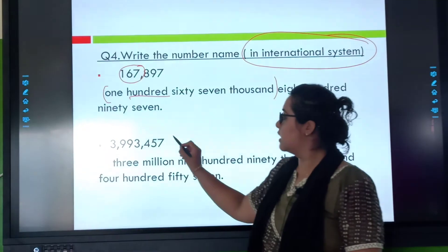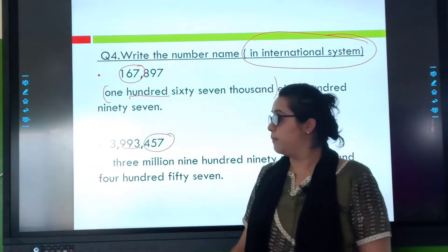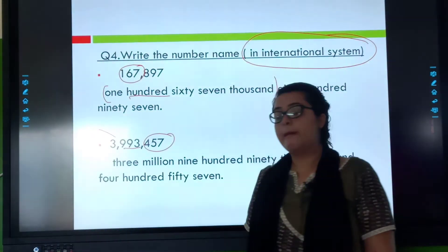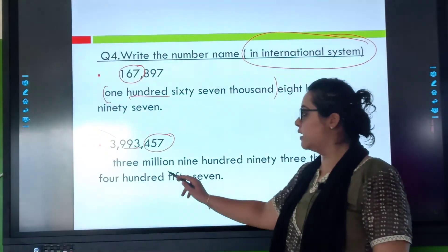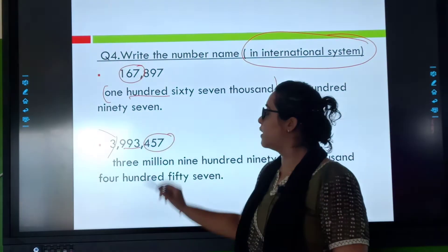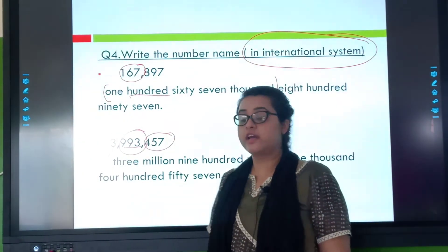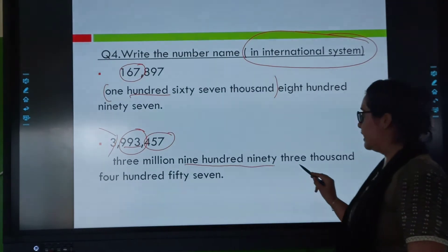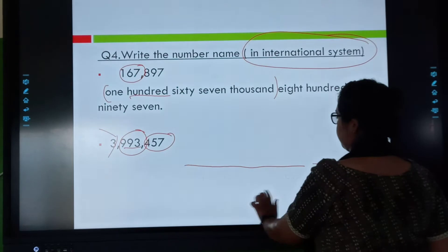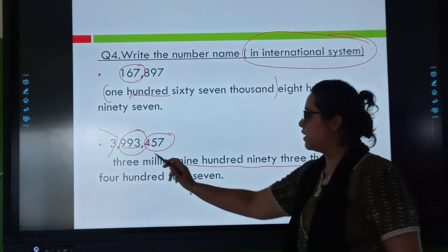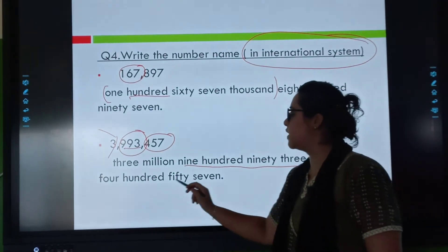Now here we will see: this belongs to the ones family, this belongs to the thousands family, and this belongs to the millions family. Three million — now nine hundred ninety-three thousand — four hundred fifty-seven. So the answer is: three million, nine hundred ninety-three thousand, four hundred fifty-seven.